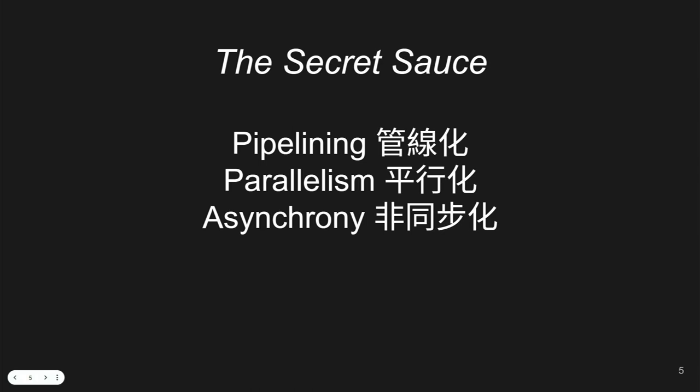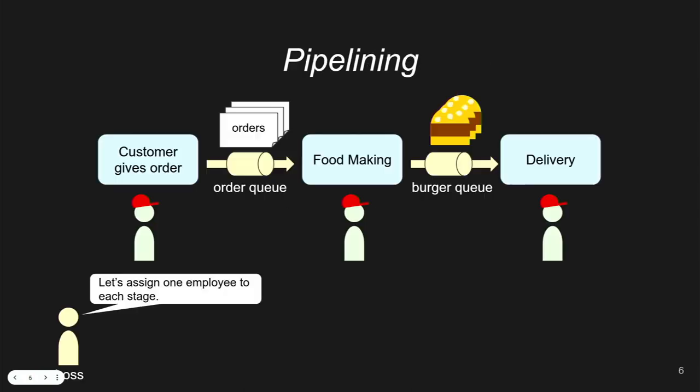In this domain, there are three — actually four — major techniques for optimization. The third I forgot to write down. The first is pipelining, the second is parallelization, and the third is asynchronization. These concepts are actually quite old — they were thought about when designing CPUs back in the 1970s and 80s. Let me explain how pipelining works in our ordering example.